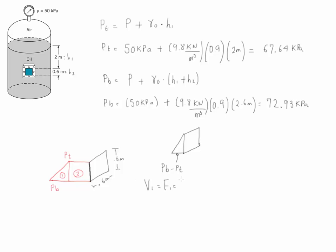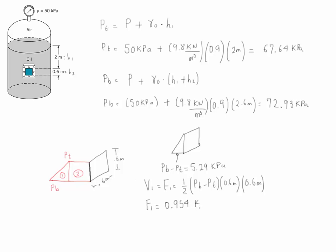So volume 1, which equals the resultant force F1, is going to be one half times (pb minus pt) times the height of 0.6 meters, multiplied by the depth of 0.6 meters. The base (pb minus pt) is equal to 5.29 kilopascals. Entering all values, the resultant force for the triangular cross-sectional area is equal to 0.954 kilonewtons.